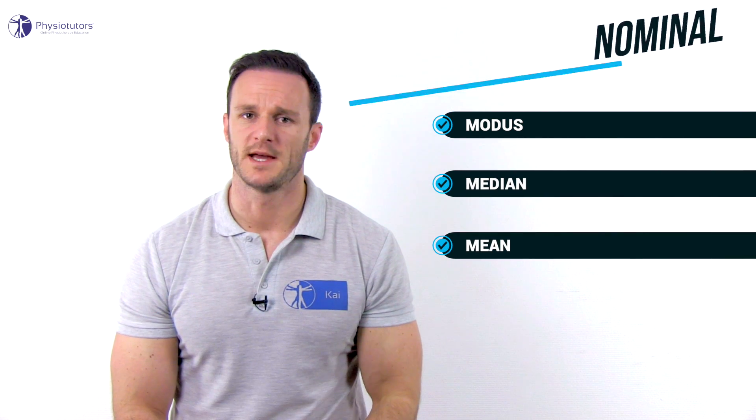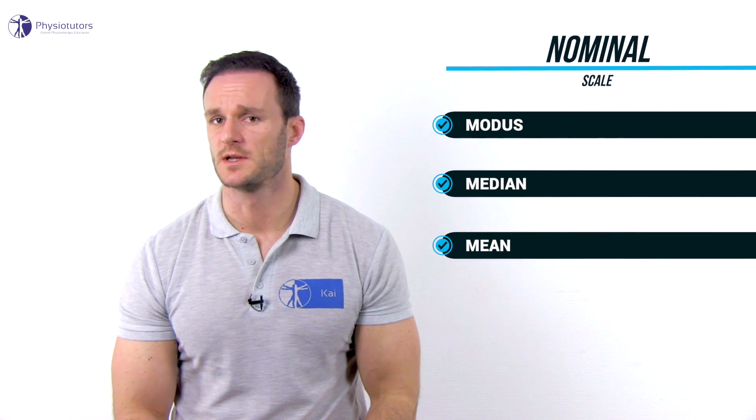With data measured on a nominal scale you can calculate the modus. The modus is the score that has occurred the most. If we take the following row of numbers — 2, 3, 6, 6, 6, 8, 8, 9, 15, and 17 — the modus would be 6.